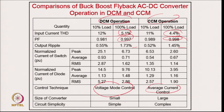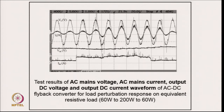A major difference between CCM and DCM: the peak current rating of the device in DCM is approximately three times that of CCM, and similarly for the diode current rating — about three times. Experimental prototype results confirm: supply voltage and supply current remain in phase and unity power factor is maintained during load perturbation from 60 W to 200 W and back to 60 W.